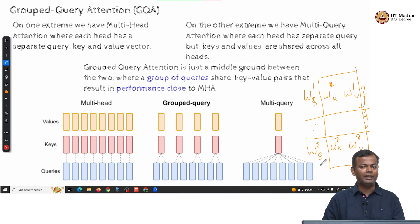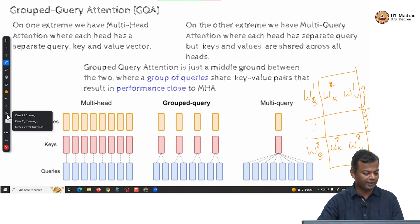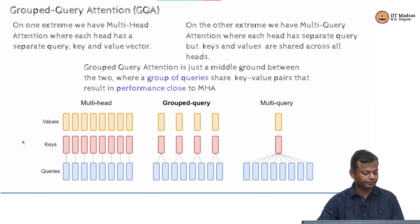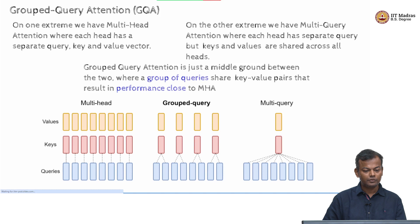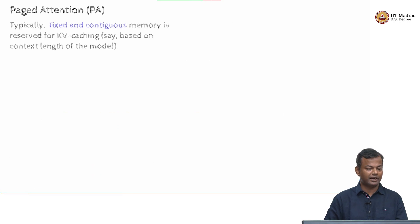So those are the three different types of attentions: regular multi-head attention where every head has its own keys and values, grouped query attention where some heads share their keys and values, and multi-query attention where all heads share their keys and values.